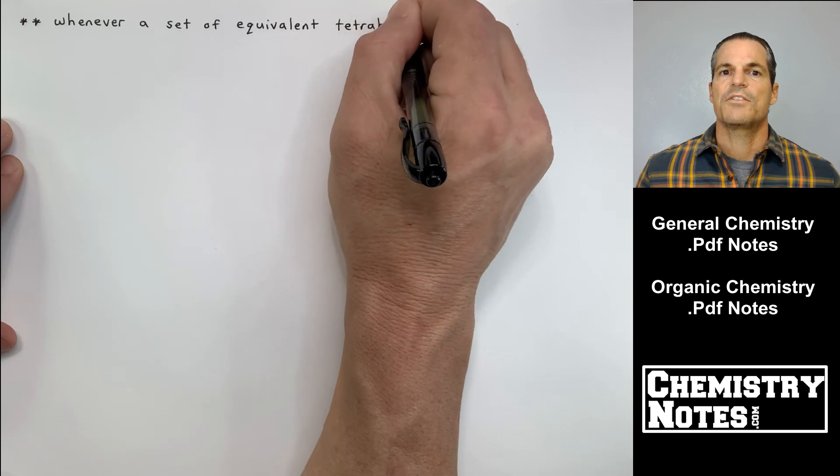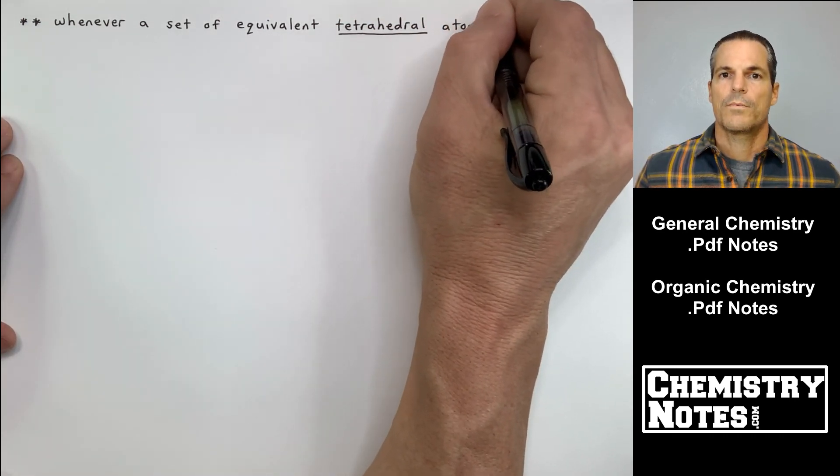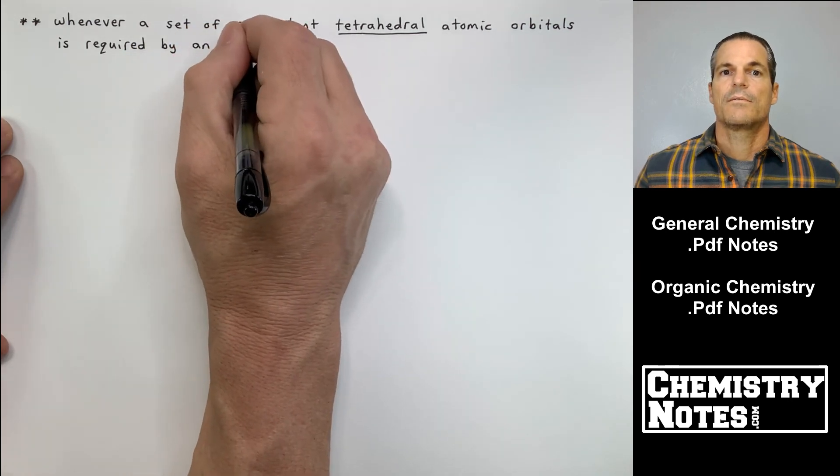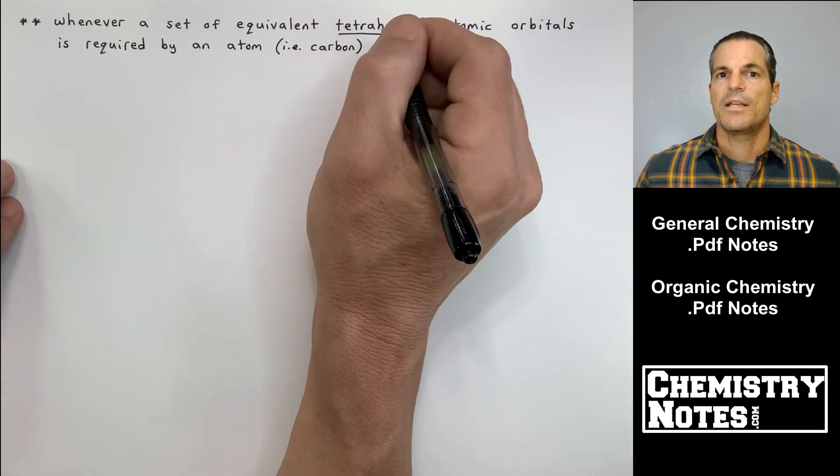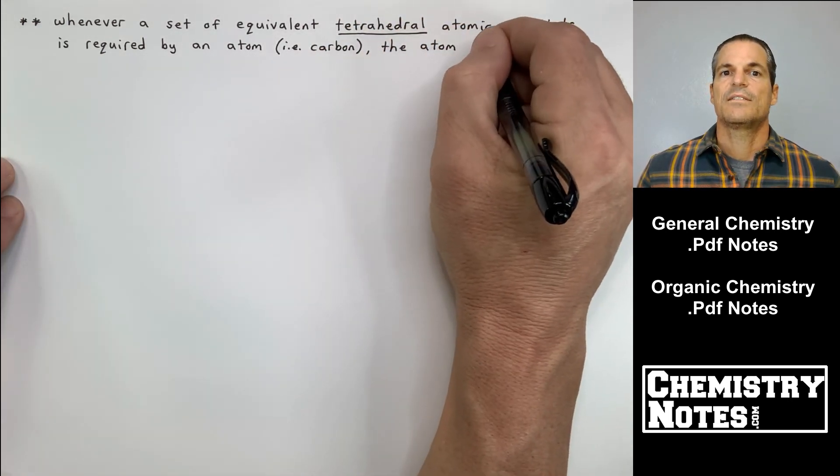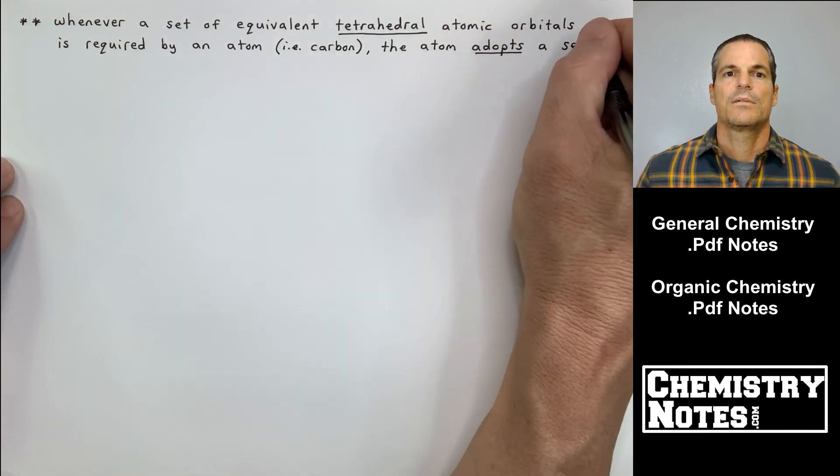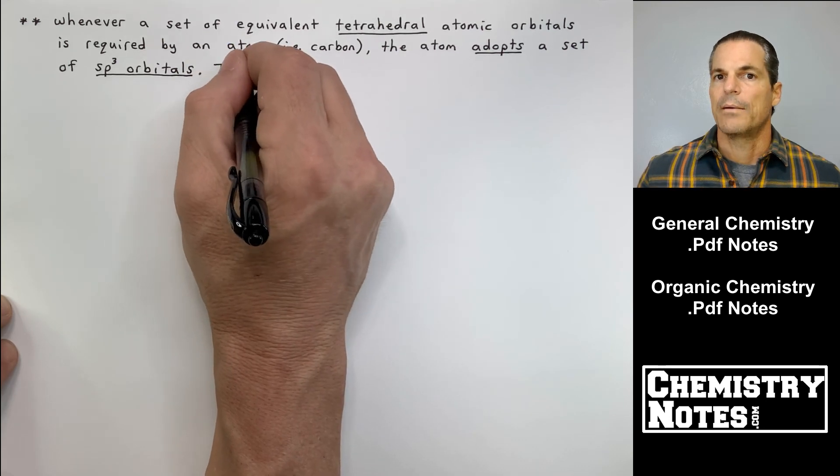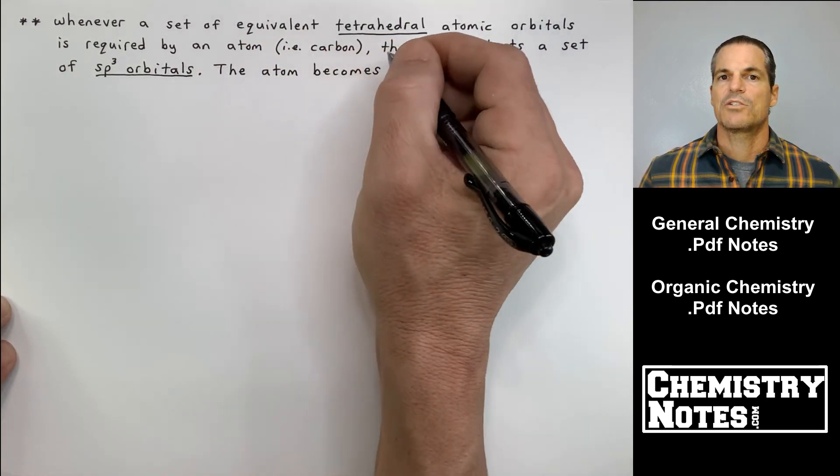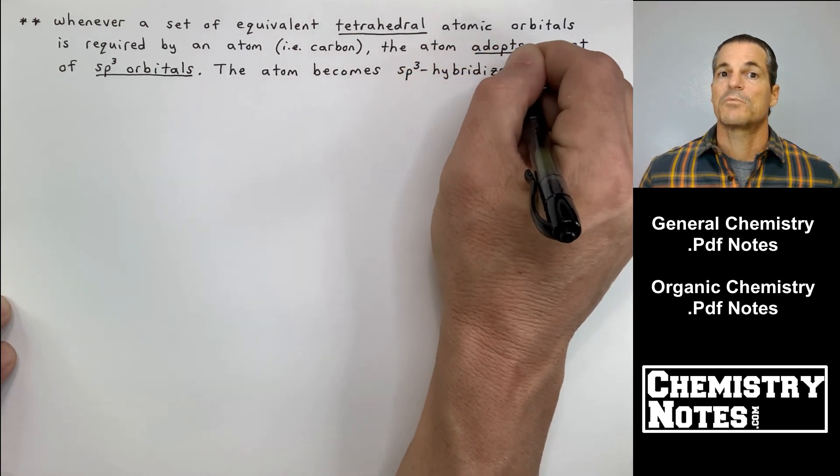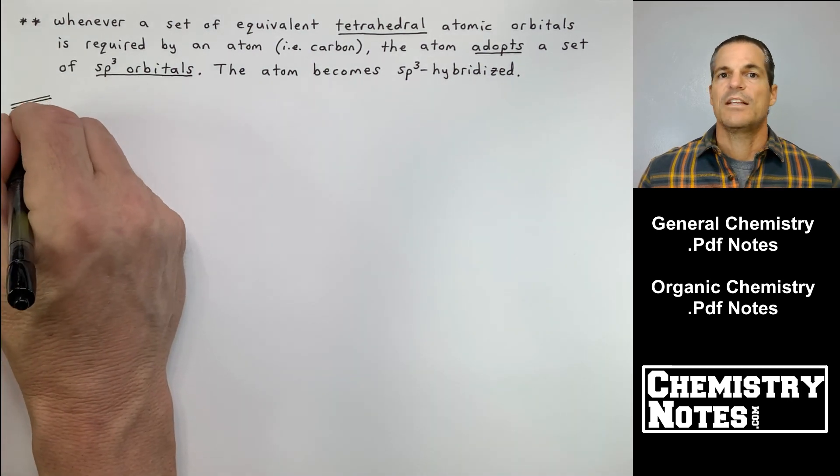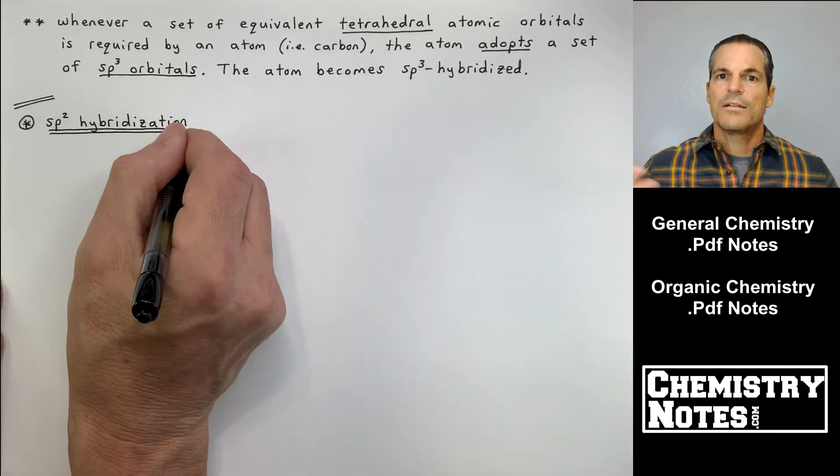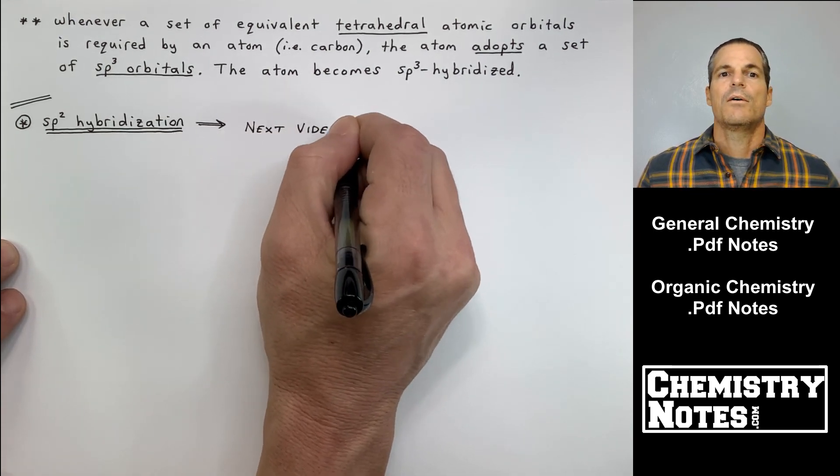Now we have four equivalent bonds arranged tetrahedrally. This is exactly what we wanted, and we could only get this if carbon had four equivalent sp3 orbitals to do that. We wouldn't be able to do that with one atomic orbital that's a 2s and three that were 2ps. It had to mix them. We had to hybridize them. So whenever a set of equivalent tetrahedral atomic orbitals is required by an atom, such as carbon in the last example, the atom adopts a set of sp3 orbitals. Now it doesn't have to be four atoms. For example, NH3 makes three atoms attached to it, three hydrogens plus a lone pair. So that could also be sp3. H2O, the oxygen has two hydrogens, two lone pairs. That's four equivalent hybrid orbitals required. So that's sp3 hybridization.